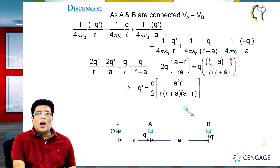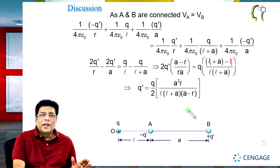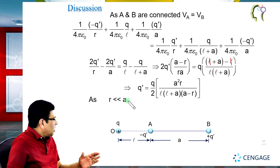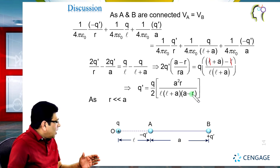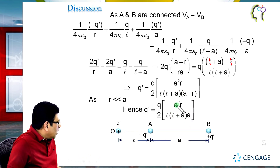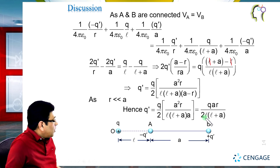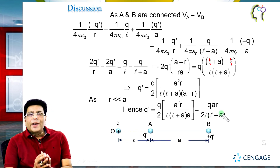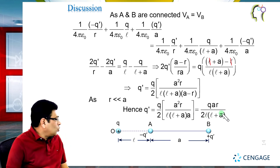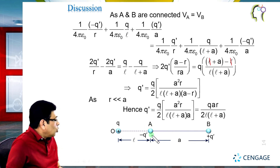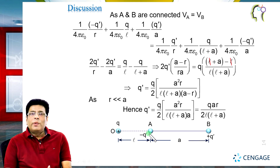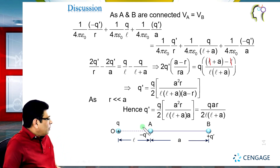We are given that small r is much smaller than small a, so we can neglect small r in comparison to small a, writing just small a in the denominator. The two factors of small a cancel, giving the final result: q dash = q × a × r / [2l(l + a)]. This is the magnitude of the induced charge on each sphere. Regarding sign, sphere A carries the negative induced charge and sphere B carries the positive induced charge.